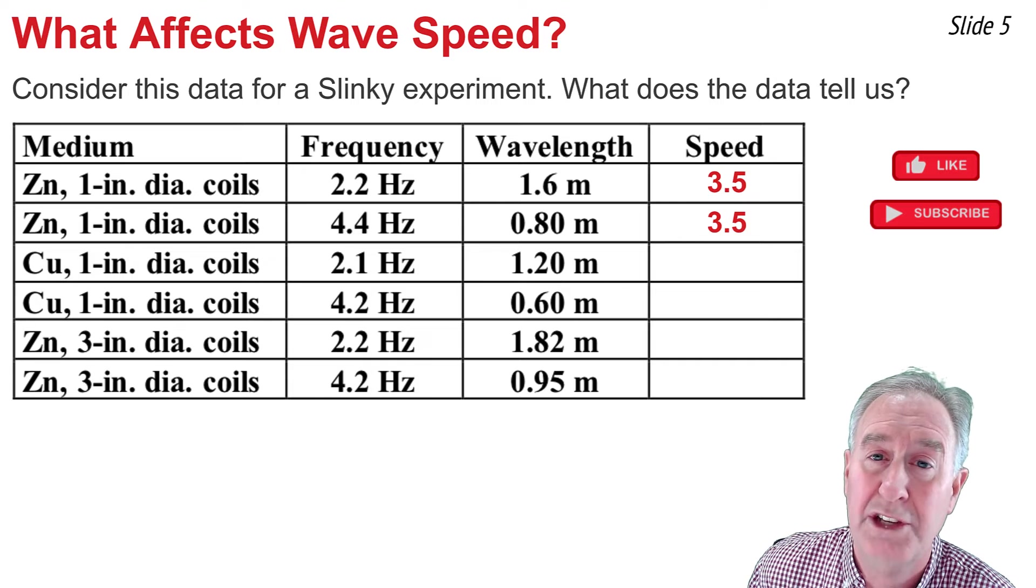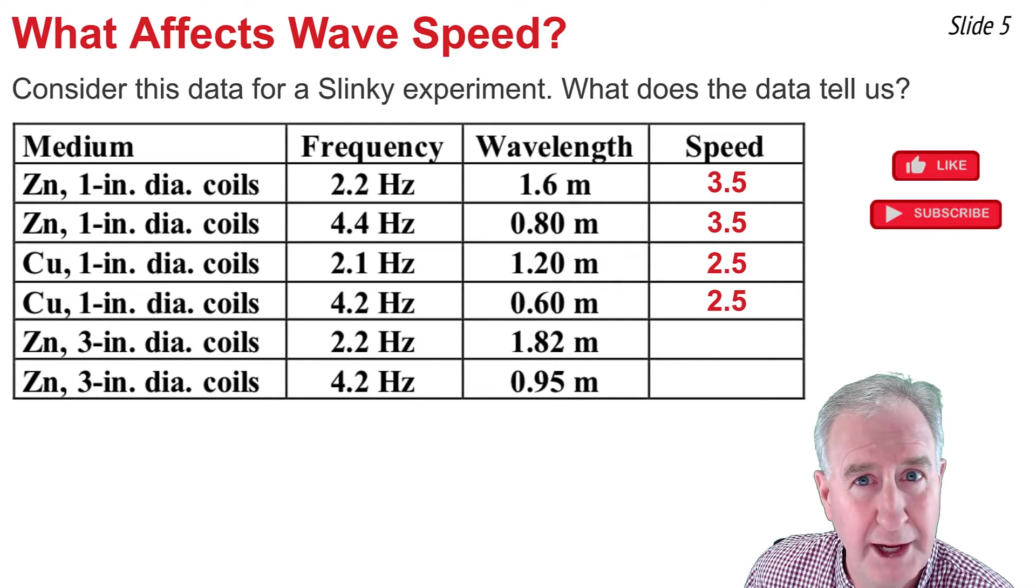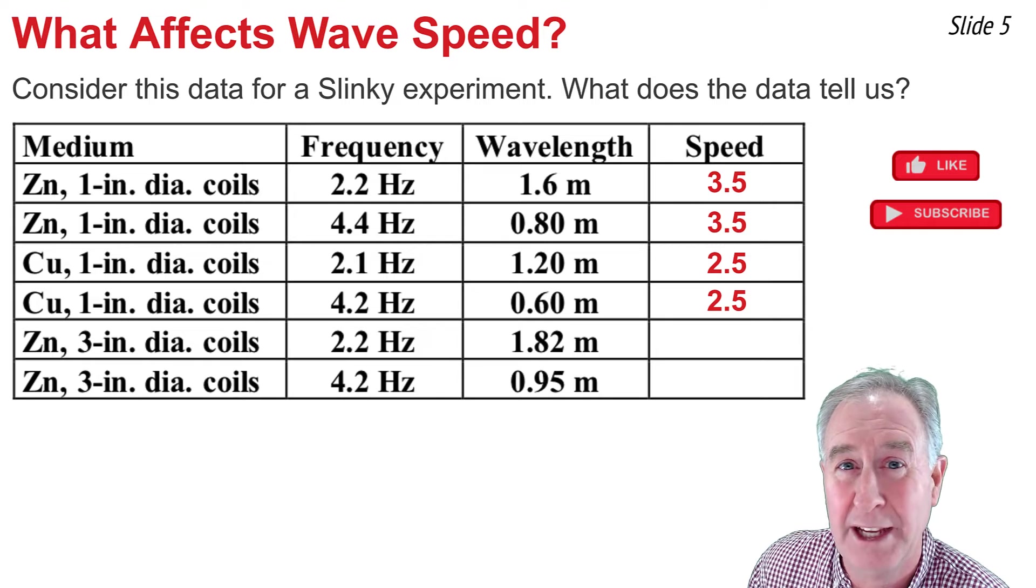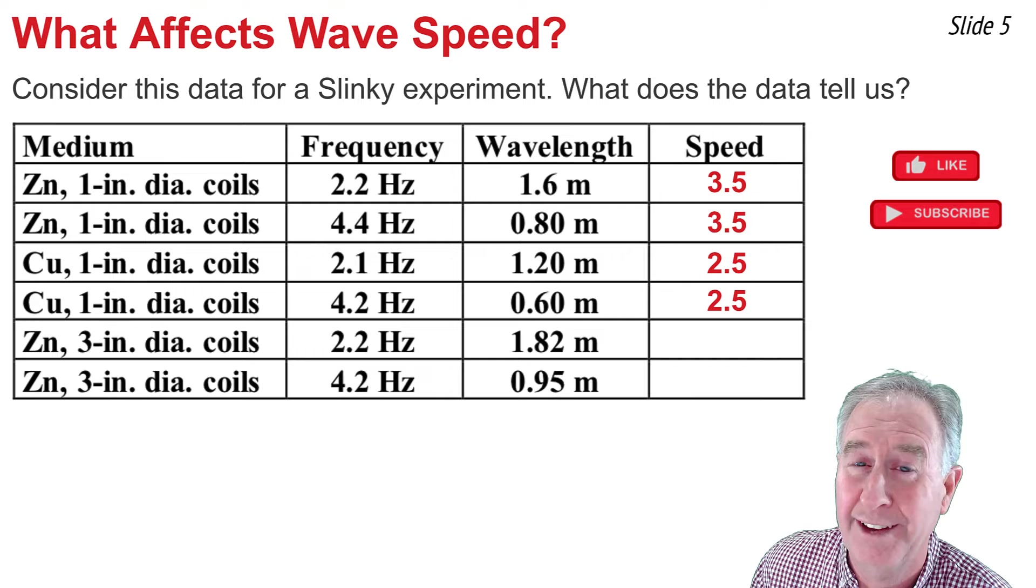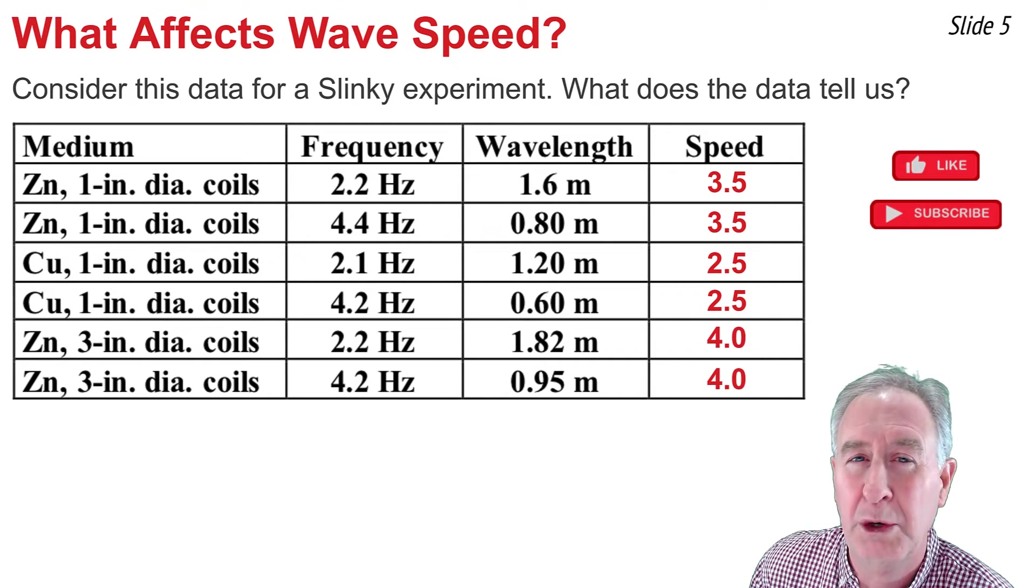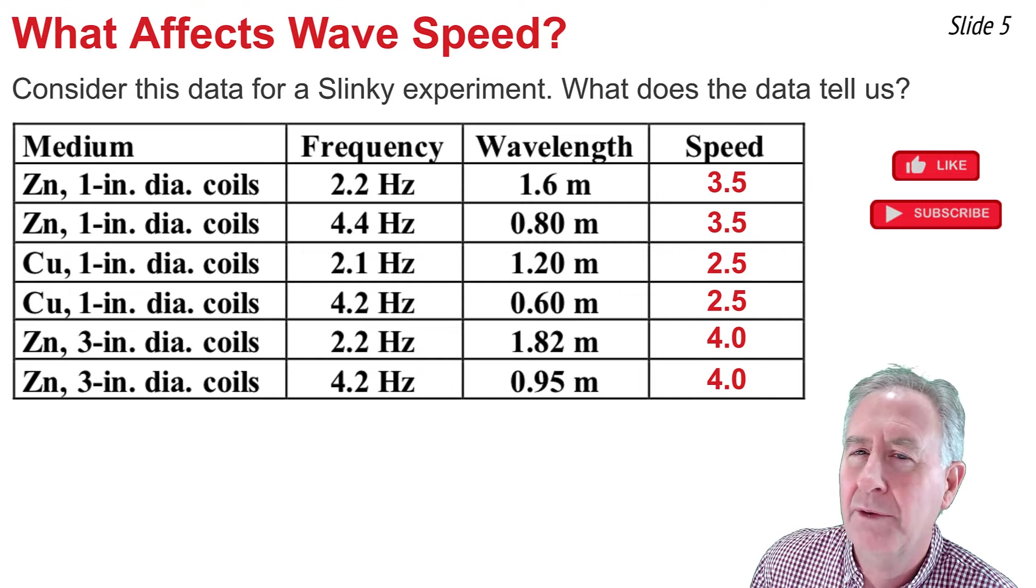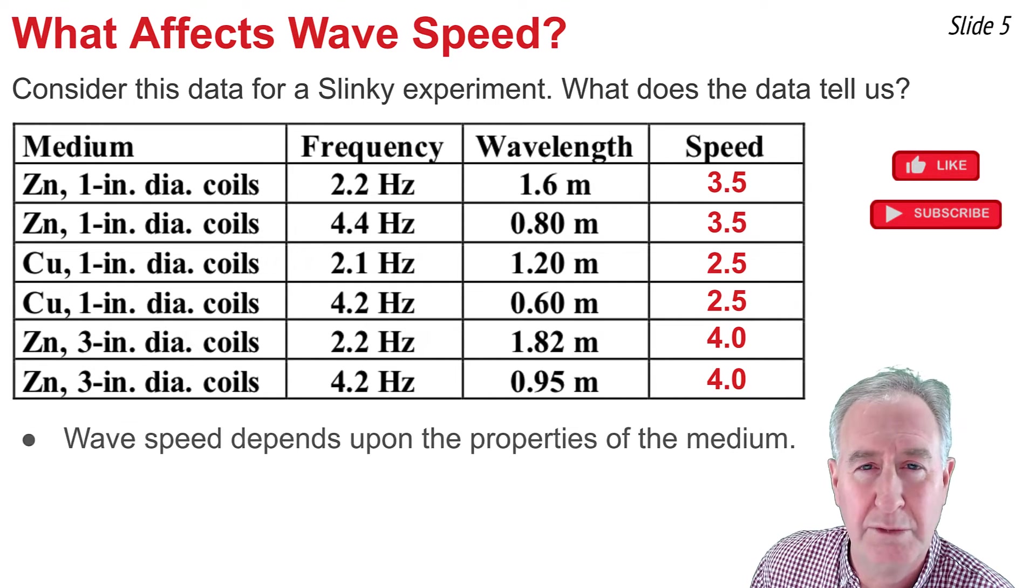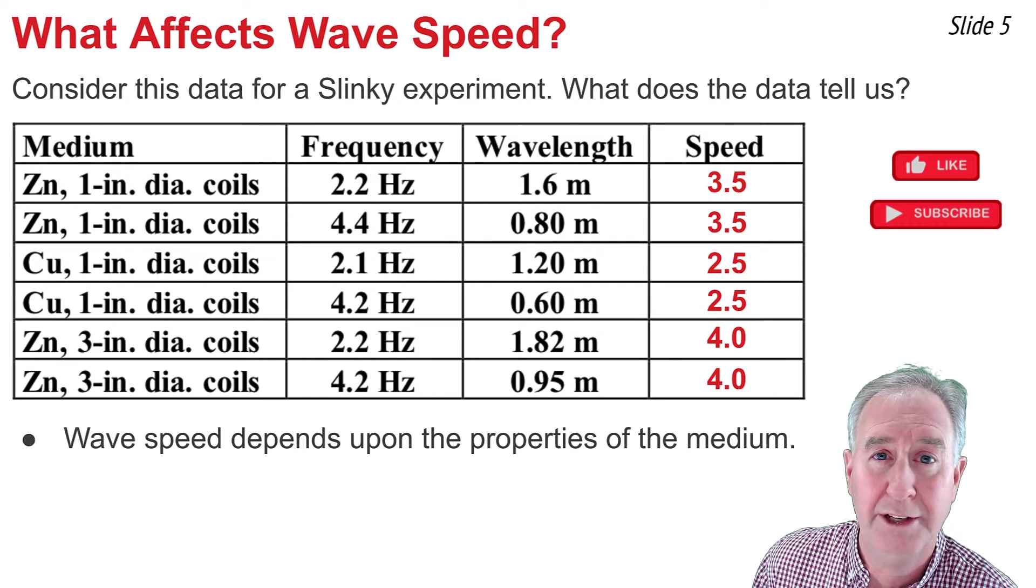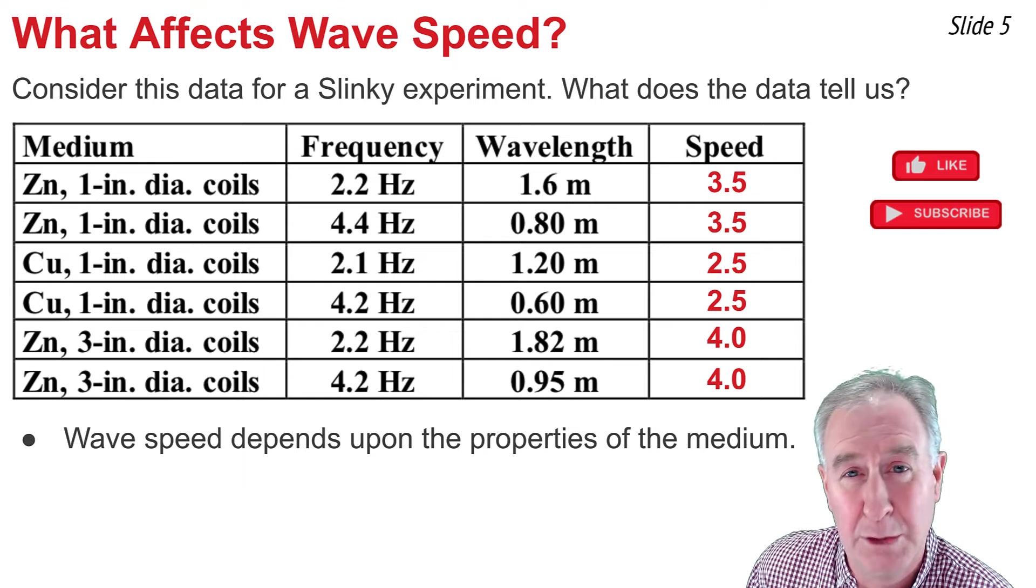Let's look at row 3 and 4 where the medium all of a sudden changes from a zinc-coiled slinky to a copper-coiled slinky. When we do our speed calculation, we get a different value, 2.5 meters per second for the speed. Interestingly, when we change the medium from zinc to copper, we change the speed. Now we notice row 4, the speed's the same as row 3, despite the fact the frequency was different. The wavelength was also different, but the speed stayed constant. We'll repeat the process in row 5 and 6, calculating a speed of 4.0 meters per second when the slinky changes to a 3-inch diameter coil zinc slinky. We get a different speed. Now, if we ask, what does this data tell us? What's really jumping out at me is, first of all, that while you calculate the speed of a wave by going v equal f times lambda, the speed of the wave doesn't actually depend upon what the f and lambda value are. It depends on what the medium is.